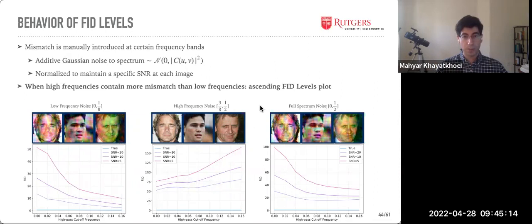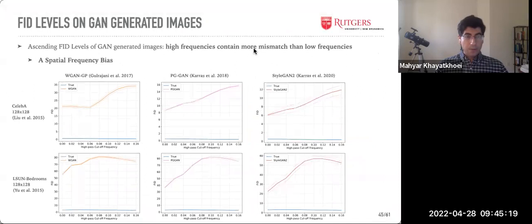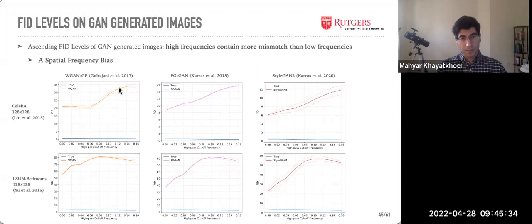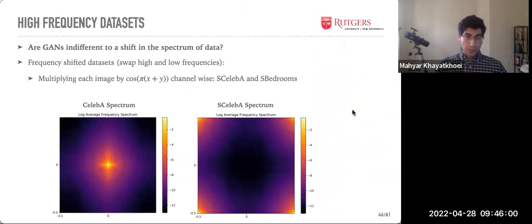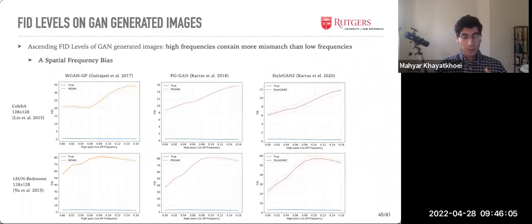Training three state-of-the-art GANs on face and bedroom datasets at 128×28 resolution, the FID-levels plots show rising behavior in almost all cases — evidence that GANs are biased against high frequencies. However, one could argue this is just because the training data itself had more prominent low frequencies. To rule this out, we directly test whether GANs are indifferent to a spectral shift. We multiply each image by a cosine channel to swap low and high frequencies, creating a shifted dataset.